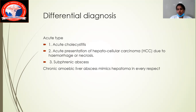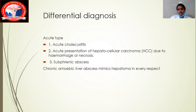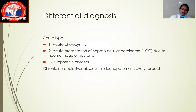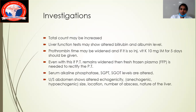Differential diagnosis includes cholecystitis, cholelithiasis, hepatocellular carcinoma, and subphrenic abscess. Chronic amoebic liver abscess can mimic a carcinoma or hematoma on examination.